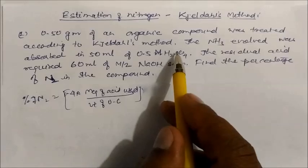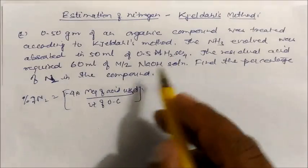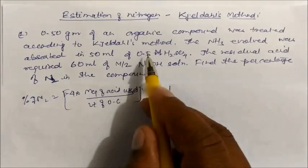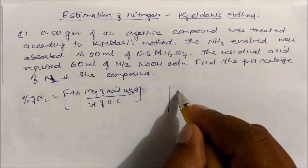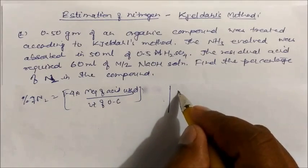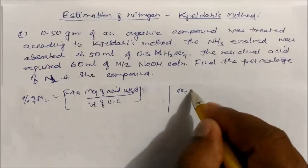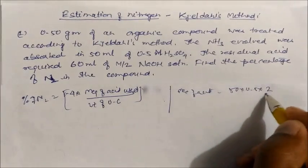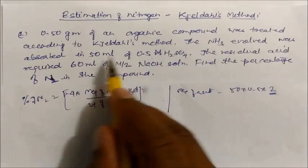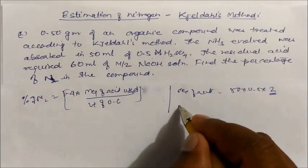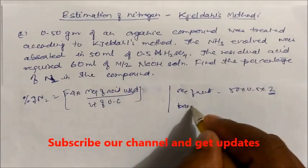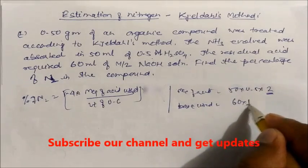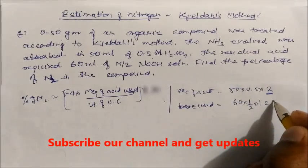The acid used is H₂SO₄. Total milliequivalents of acid = 50 × 0.5 × 2 (where 2 is the n-factor). For the base, milliequivalents of NaOH = 60 × (1/2) × 1, which gives 30.